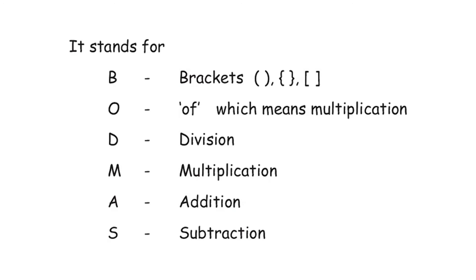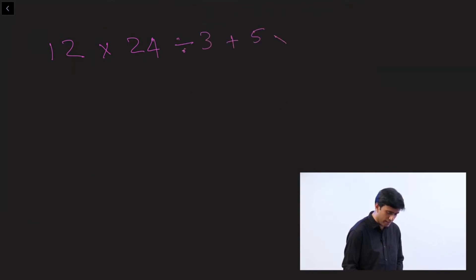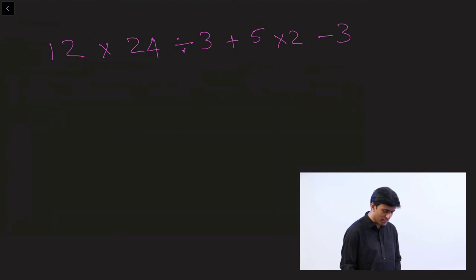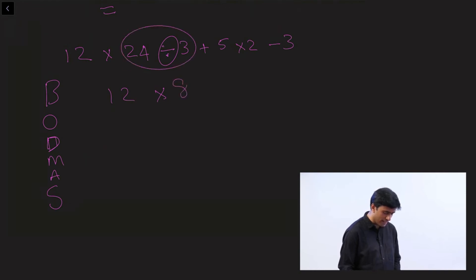Let's solve a mathematical expression using BODMAS: 12 × 24 ÷ 3 + 5 × 2 − 3. We have all basic operators here. Following BODMAS, D comes first — division. So 24 ÷ 3 = 8, giving us 12 × 8 + 5 × 2 − 3.